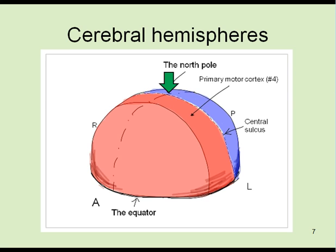This is the North Pole. This is the equator. Anterior half painted in red corresponds to frontal lobe. Posterior half painted in blue corresponds to parietal, occipital and temporal lobes.